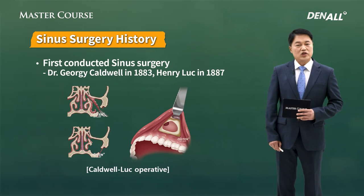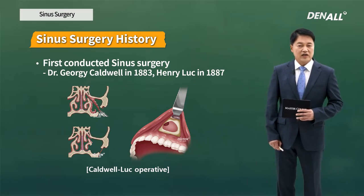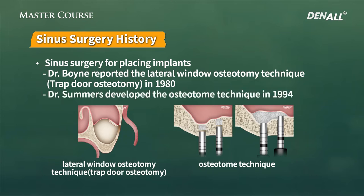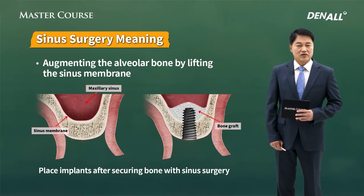Let's look at the history of sinus surgery. Originally it was not for implants, but to treat sinusitis or other reasons. In 1883, Caldwell and in 1887, Henry Luc did such surgeries, and since then we have come to call it Caldwell-Luc surgery. For implants, in 1980 Dr. Boyne used the lateral window osteotome technique, referred to as trapdoor osteotomy. In 1994, Summers developed the osteotome technique — in other words, a socket-lift crestal approach. Sinus surgery means lifting the sinus membrane and augmenting the alveolar bone to support the implant.